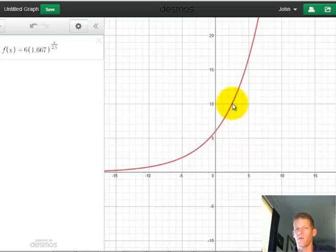2.5 comma 10 is on the graph. So I did model my data with an exponential function that characterizes that type of growth. Hopefully this helps you understand how to take data and model it with a specific exponential function based on what the data says. Look forward to hearing your comments and good luck on the homework.